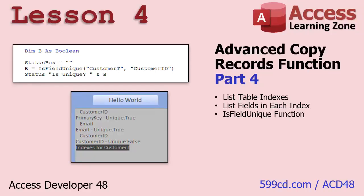In Lesson 4 we're going to start by writing a function to list all of the table indexes in a table's TableDef so we can see what the indexed fields are. Then we'll determine what fields are in each index, and using that information we'll write a function to determine if a specific field is unique — in other words, whether it is indexed no duplicates.